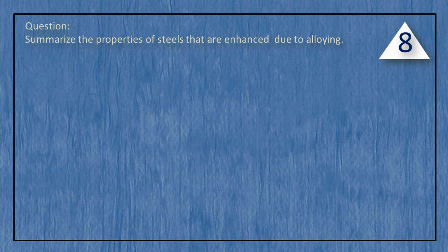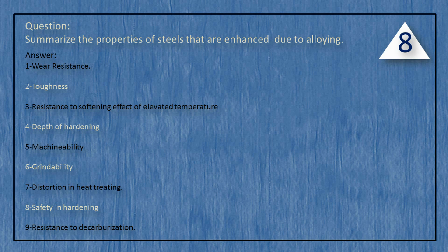Summarize the properties of steels that are enhanced due to alloying. The properties enhanced are: wear resistance, toughness, resistance to the softening effect of elevated temperature, depth of hardening, machinability, grindability, distortion in heat treating, safety in hardening, and resistance to decarburization.